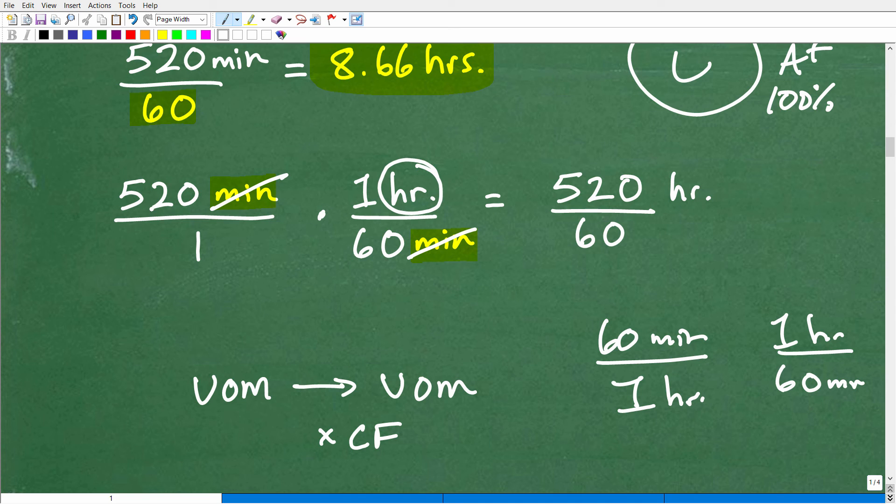Now, when I multiply these fractions, the minutes cross cancel. Minutes over minutes, they're going to cross cancel and I'm left with hours. So that's why we're technically taking 520 over 1 times 1 over 60. And when I do that, okay, remember when we multiply fractions, you multiply the respective numerators and denominators. We're going to get 520 times 1, which is 520. 1 times 60, which is 60. But we're left with this one unit of measure, hours. So 520 divided by 60 is how we get our conversion from minutes to hours.